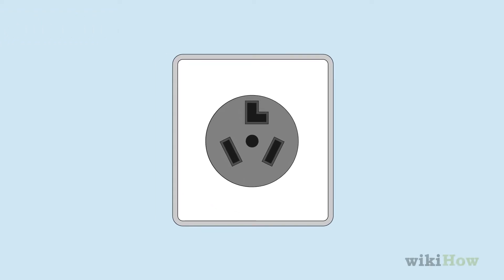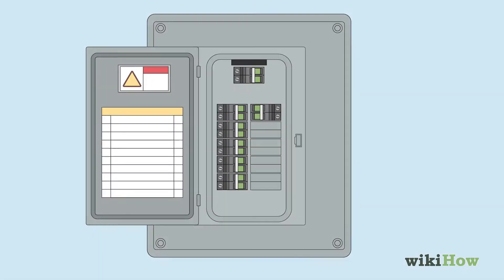To wire a 220V outlet, first switch off power at the main circuit breaker.